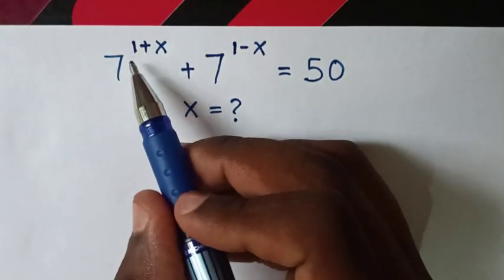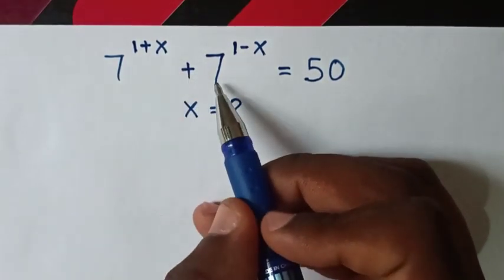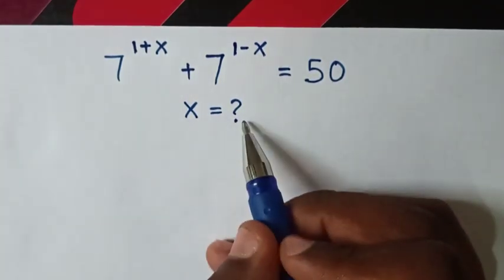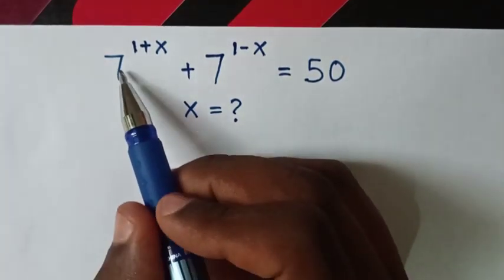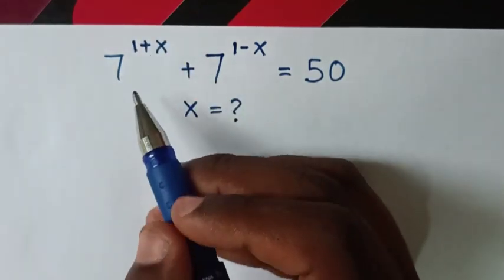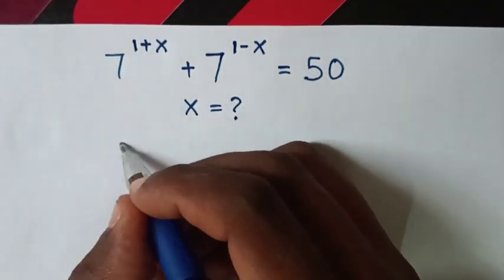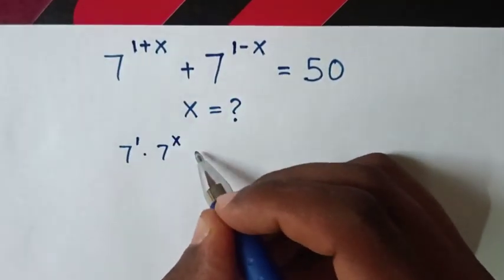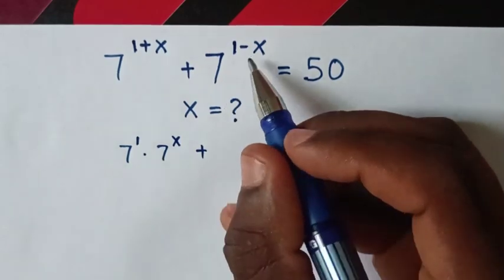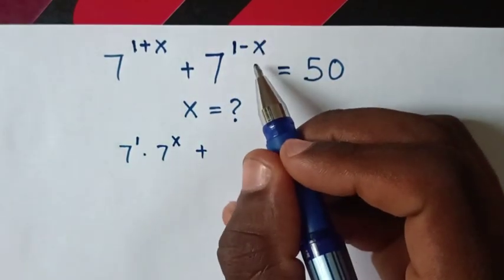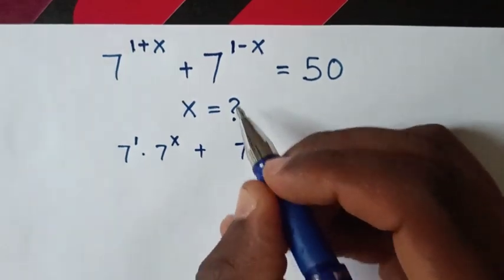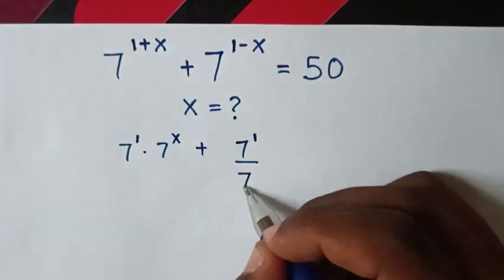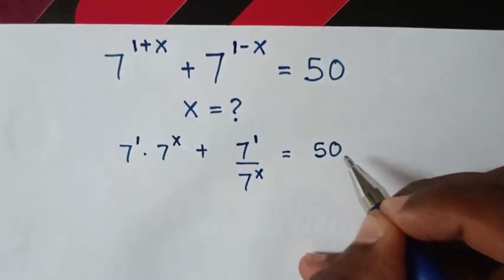Hello! How to solve 7 to the power of (1+x) plus 7 to the power of (1-x) equals 50, to find the value of x. First, 7^(1+x) can be expanded using the multiplication of exponents rule: 7^1 times 7^x. And 7^(1-x) uses the division of exponents rule: 7^1 over 7^x. This gives us 7·7^x + 7/7^x = 50.